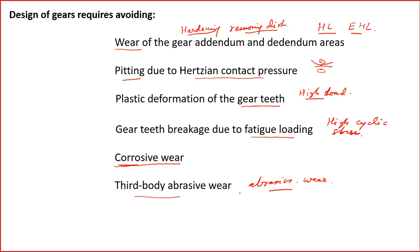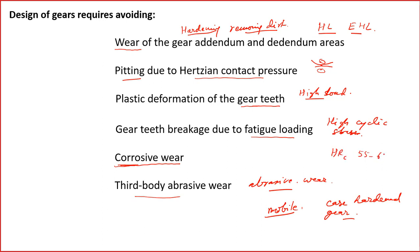An important thing in gears is case hardening, which can be used to provide small size and better power transmission. Most mobile systems like cars have case hardened gears. Case hardening can be done by carburizing or nitriding — these are the two important methods. There are other methods of surface hardening as well, and generally the hardness of the surface will be in the range of 55 to 60 HRC.